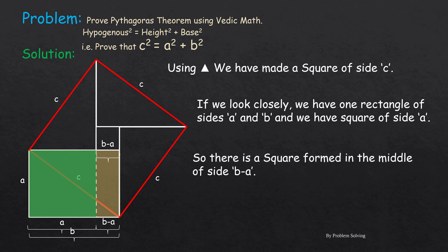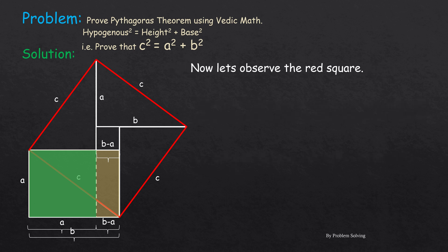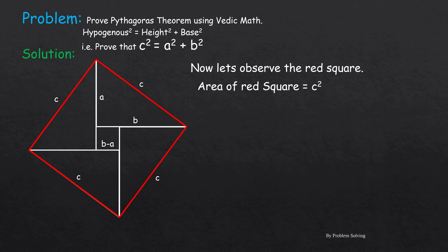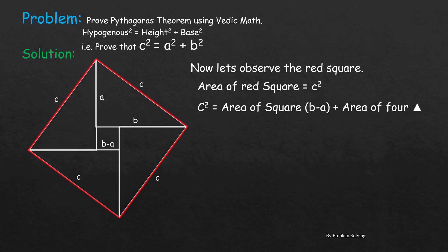So we have a square of side c and a square of side (b − a). Now let's observe the red square. To find the area of the red square, which is c², we have to find the area of the small square, which is (b − a)², plus the area of the four triangles.